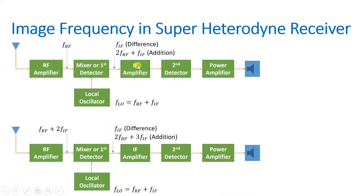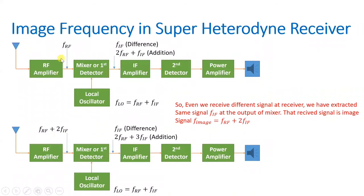When image frequency FRF + 2·FIF is received, the difference at the mixer output is FIF, but the message signal cannot be correctly decoded. To resolve the image frequency problem, we can increase the intermediate frequency FIF. By increasing FIF, the image frequency FRF + 2·FIF moves farther away in the spectrum, making it easier to filter out before the mixer, thereby resolving the image frequency issue.